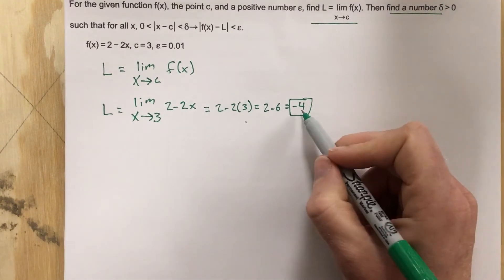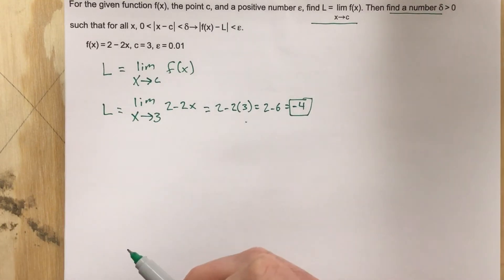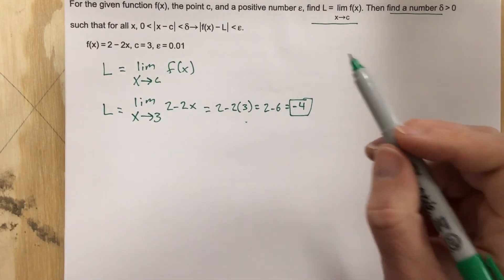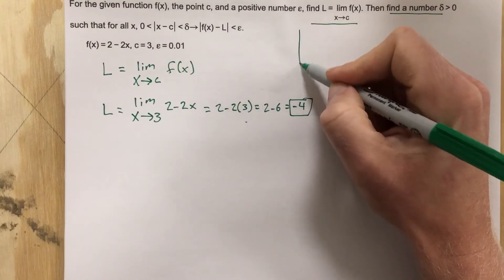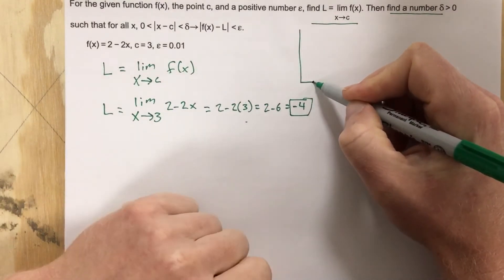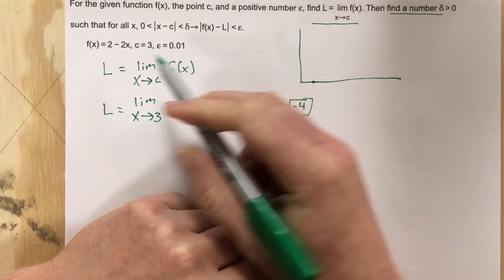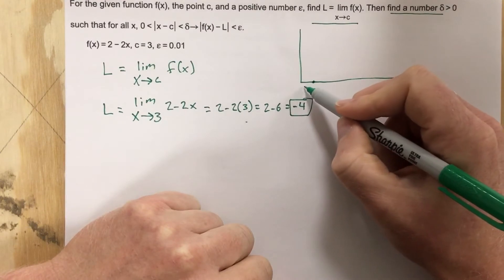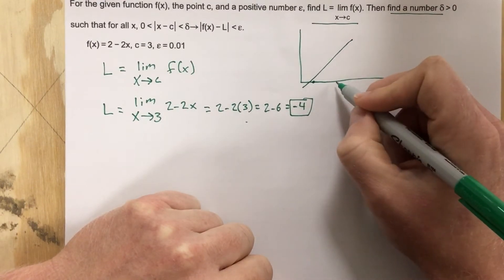Okay, then we can actually use this and do just like we've done in the other problems to find delta. We start by looking at our graph, and it's 2 minus 2x. I'm just going to draw a straight line because it's more like the conceptual thing that we need to worry about.